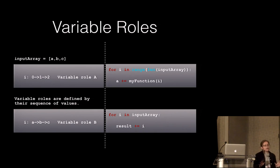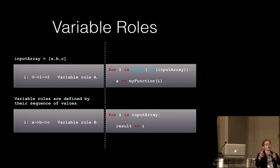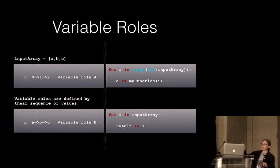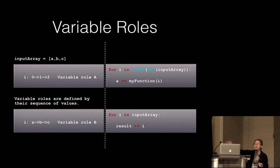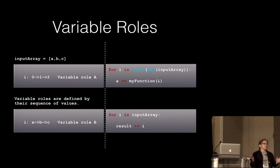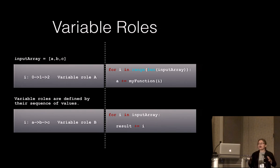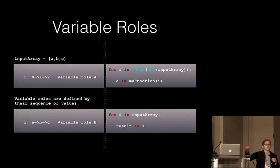I need to define a few terms. The first is a variable role, defined by the sequence of values a variable takes on during execution of a test case — the kind you might already use in an autograder. In the for loops we discussed, 'I' in each case might be named the same thing but plays a different role in the program, so we consider all variable names for each role independently.